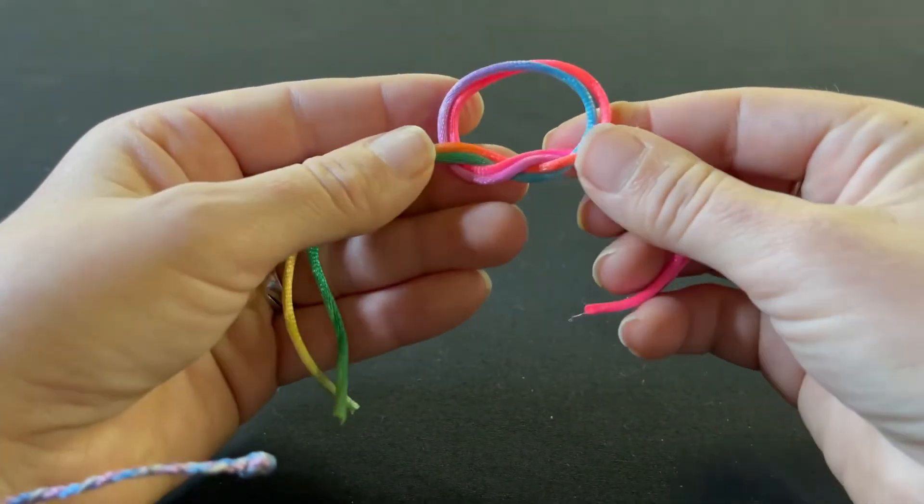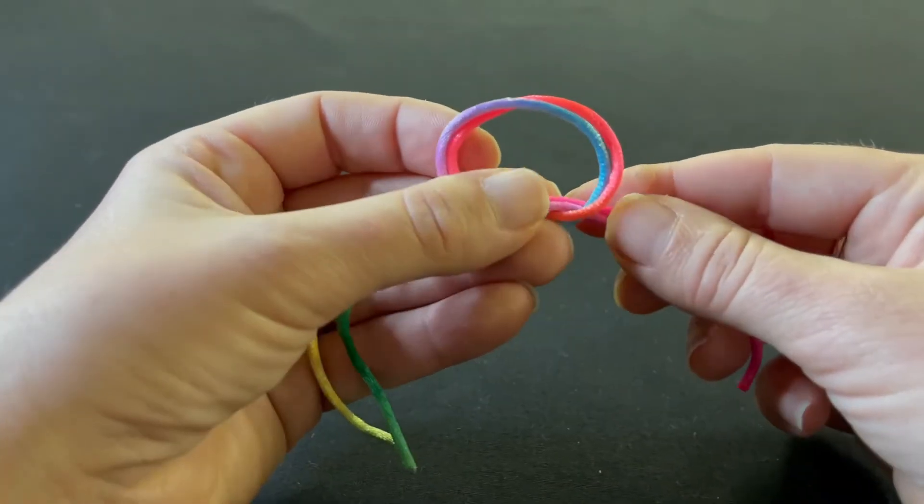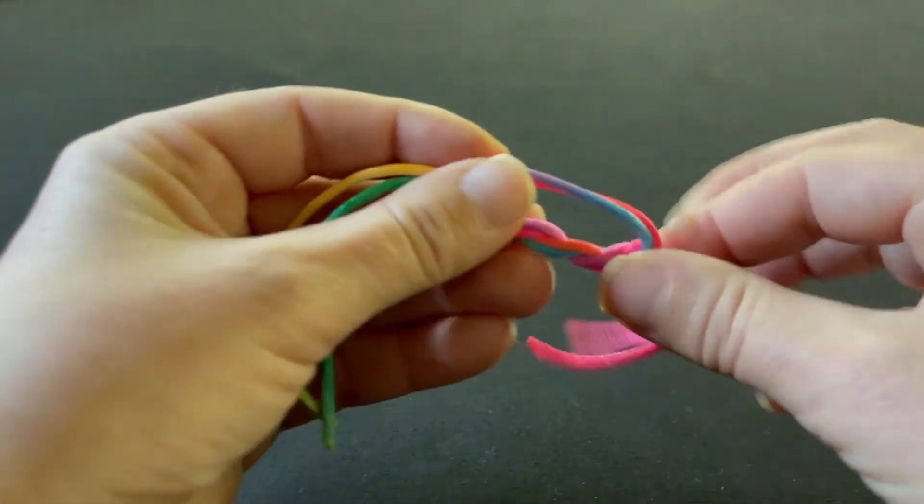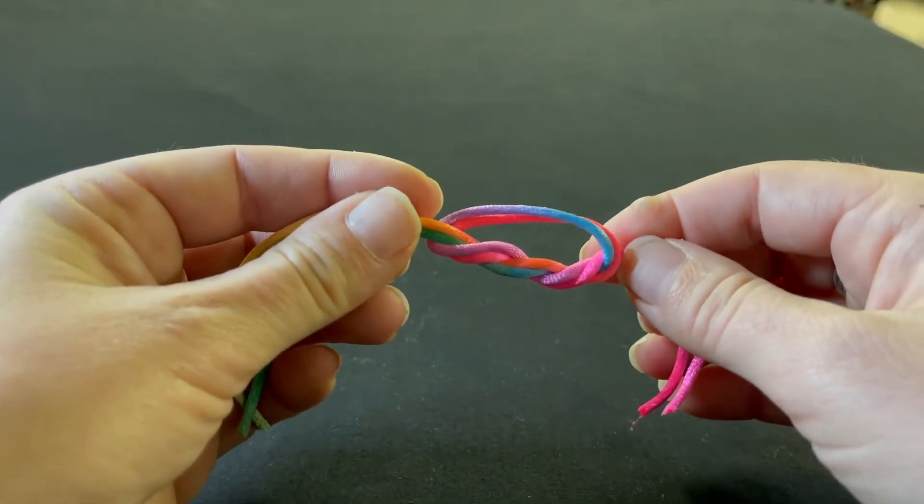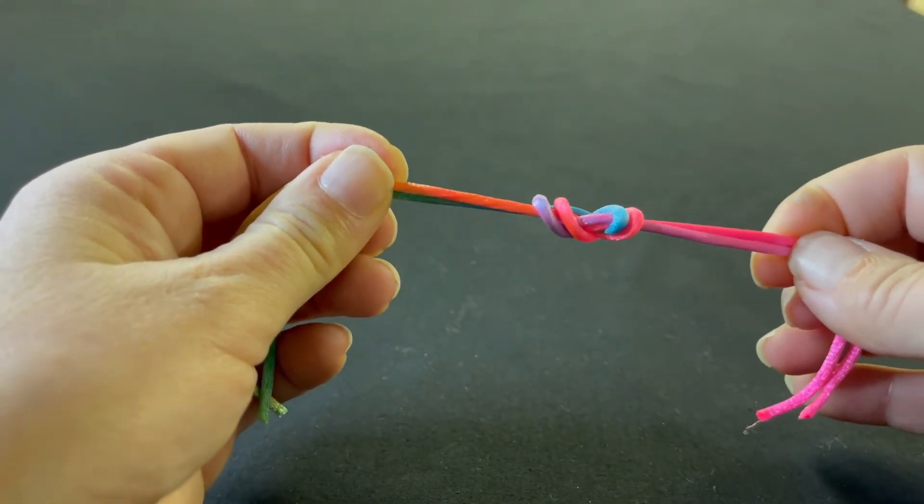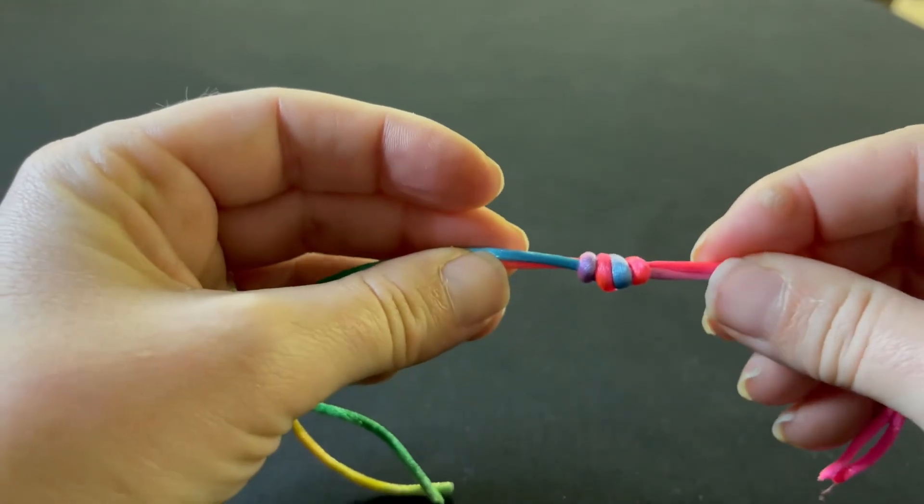Now this is a double surgeon knot so we're going to do that exact same thing again. You're going to go through the loop and to the right. And our final step is we're going to slowly pull these together to form that double surgeon knot.